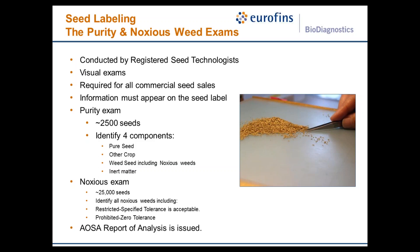These are visual exams required for all commercial seed sales, with results appearing on the seed label. The purity exam examines a smaller quantity, typically about 2,500 seeds, and the seed analyst identifies four components: the pure seed, other crop seed, weed seed including noxious weeds, and inert matter — each reported as a percentage.